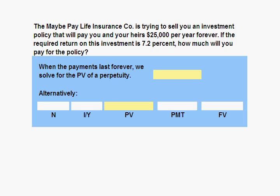The MaybePay life insurance company is trying to sell you an investment policy that will pay you and your heirs $25,000 per year forever. If the required return on this investment is 7.2%, how much will you pay for the policy?